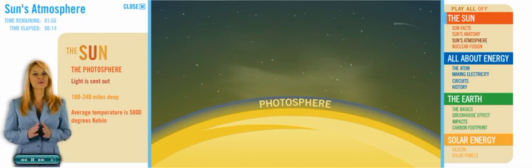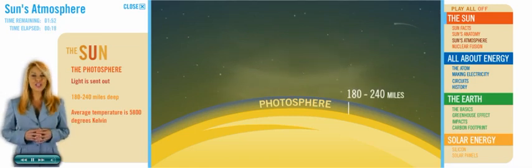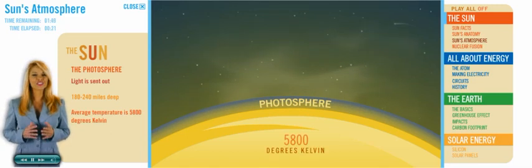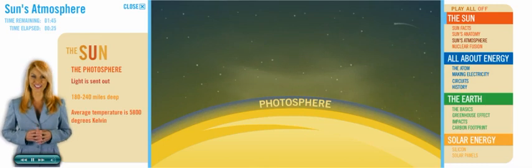The photosphere is where the light is sent out. It's anywhere from 180 to 240 miles deep, and averages 5,800 degrees Kelvin. A far cry from the heat of the Sun's interior.